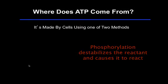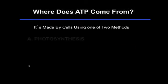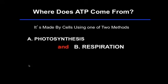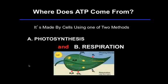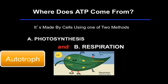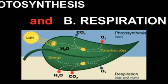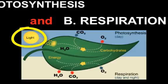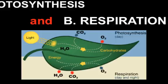Where does the cell get this ATP? It's made by cells using one of two methods — either by plants and algae or some bacteria in the process of photosynthesis and respiration. An organism that can do both is considered an autotroph. These organisms, like plants, are pretty self-sufficient because they can capture the light energy from the sun, use it to make some ATP, also use it to drive the endergonic reaction of photosynthesis, which makes chemical energy. That chemical energy is then used in the process of respiration to make lots of ATP.